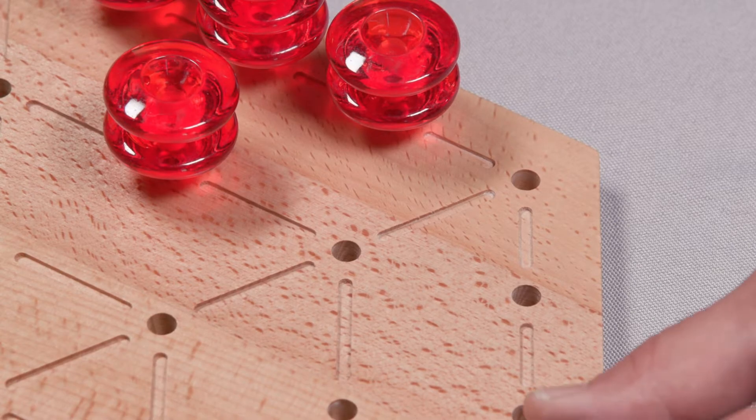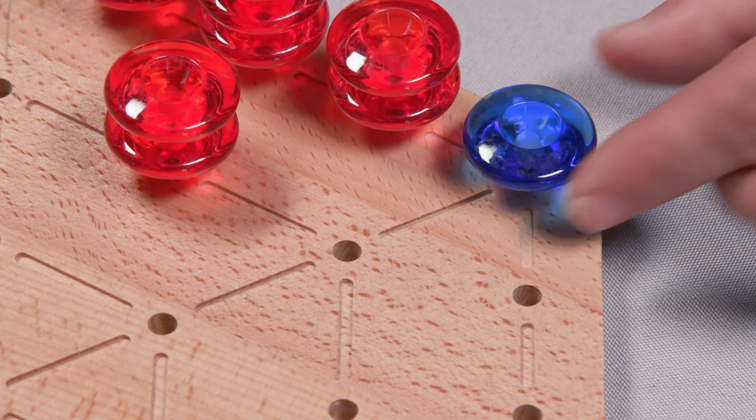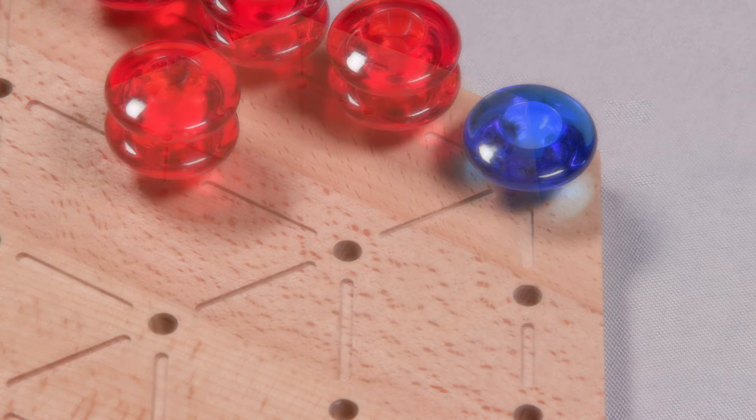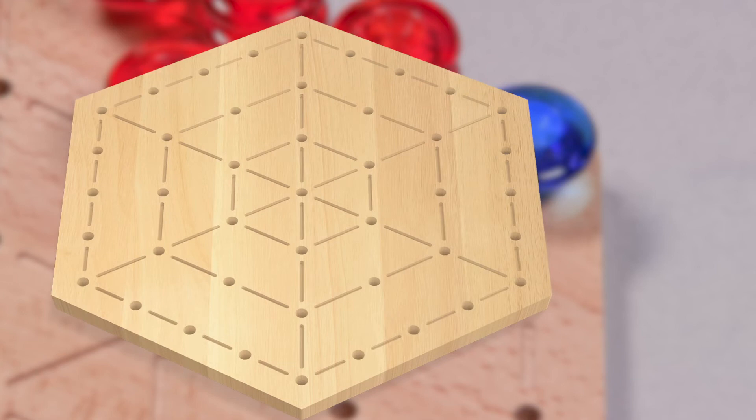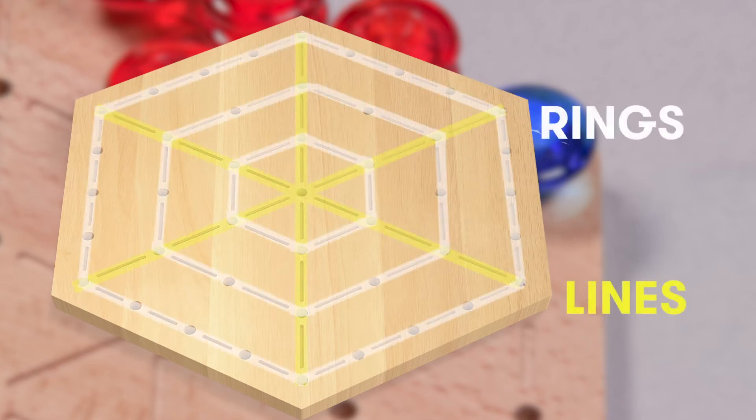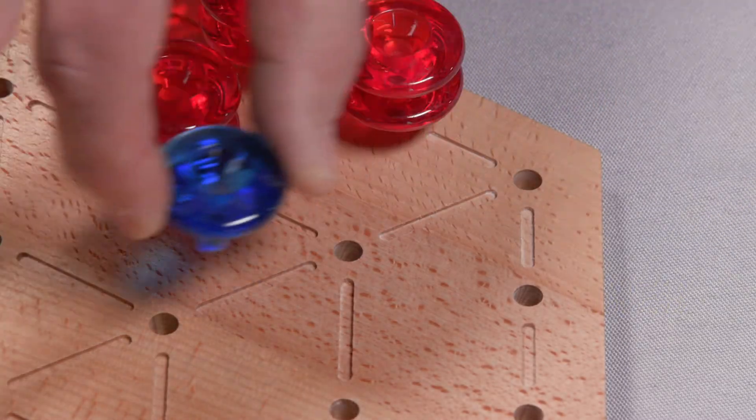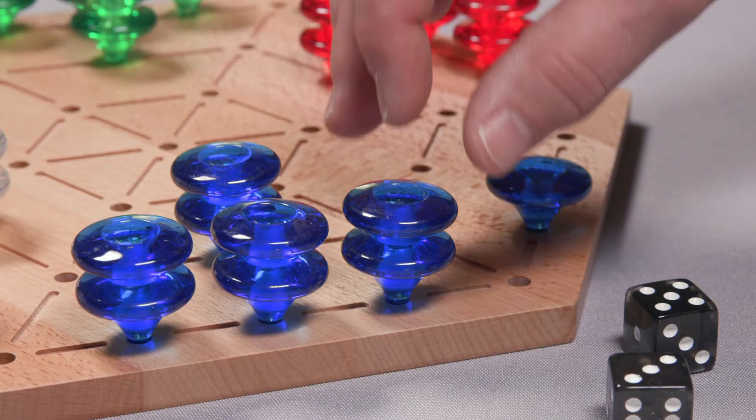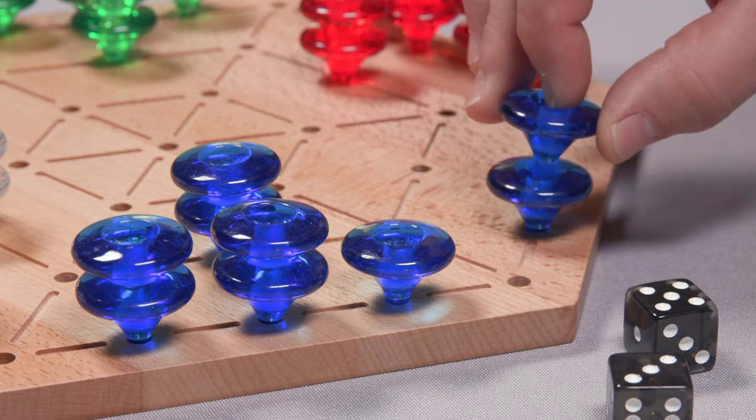You may only move along the lines etched into the board and cannot change directions within a single move. You may not go forward and back and you may not transition from lines to rings or vice versa unless your piece has stopped at an intersection first. Count every space, including those occupied by other pieces.